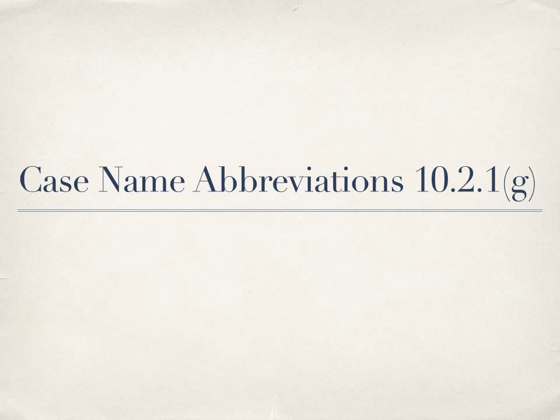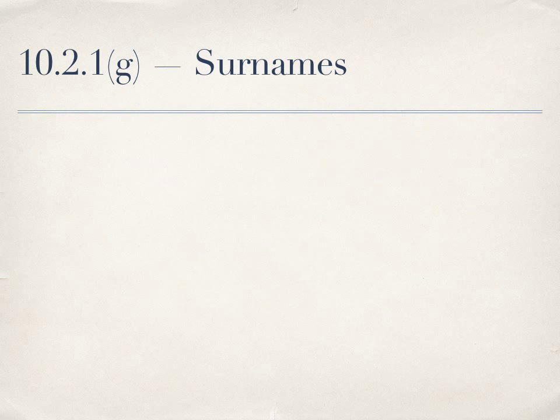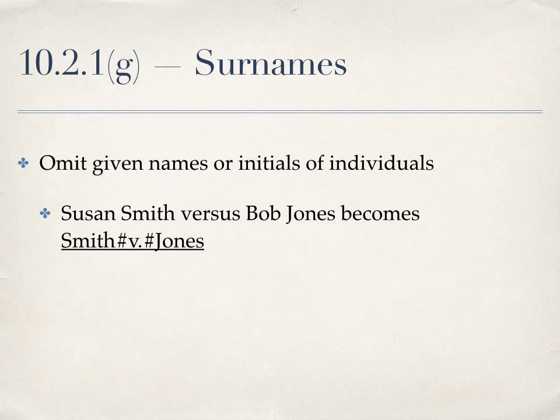Rule 10.2.1G tells us how to use surnames in forming case names. When forming a case name for a case between two individuals, you should omit given or first names and initials of the individuals. In the case of Susan Smith v. Bob Jones, the case name would simply be Smith v. Jones.